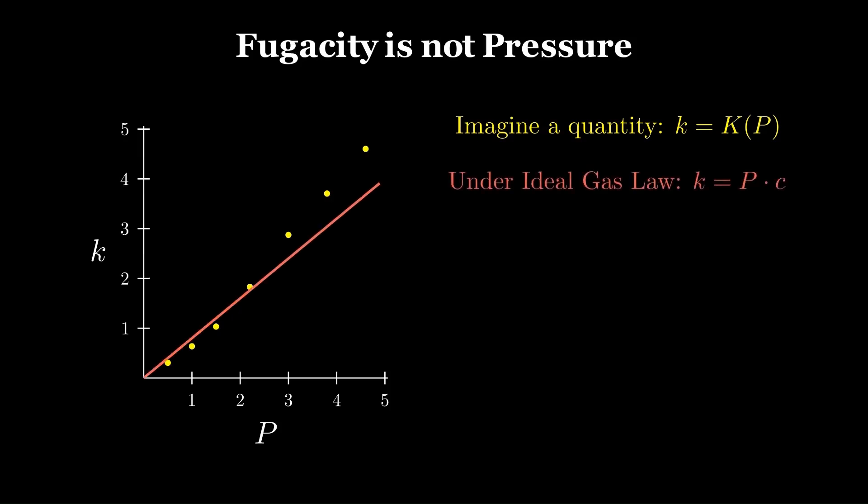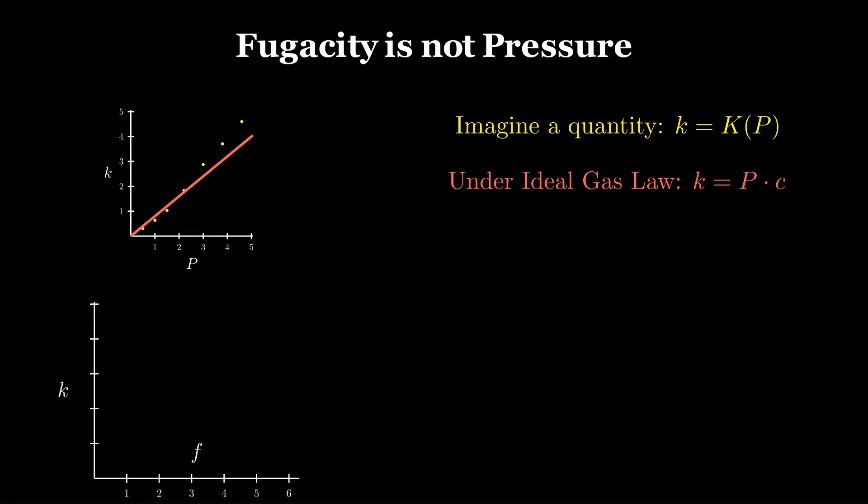The second misconception concerns fugacity's relationship to pressure. Fugacity is not pressure or real pressure. Consider an illustrative example with a hypothetical quantity k that depends only on pressure P. Assume that for an ideal gas, k varies linearly with P. However, as shown here in yellow, the real points deviate from this ideality, especially at high pressure. To resolve this issue, we introduce fugacity f and define k equal to f times c.